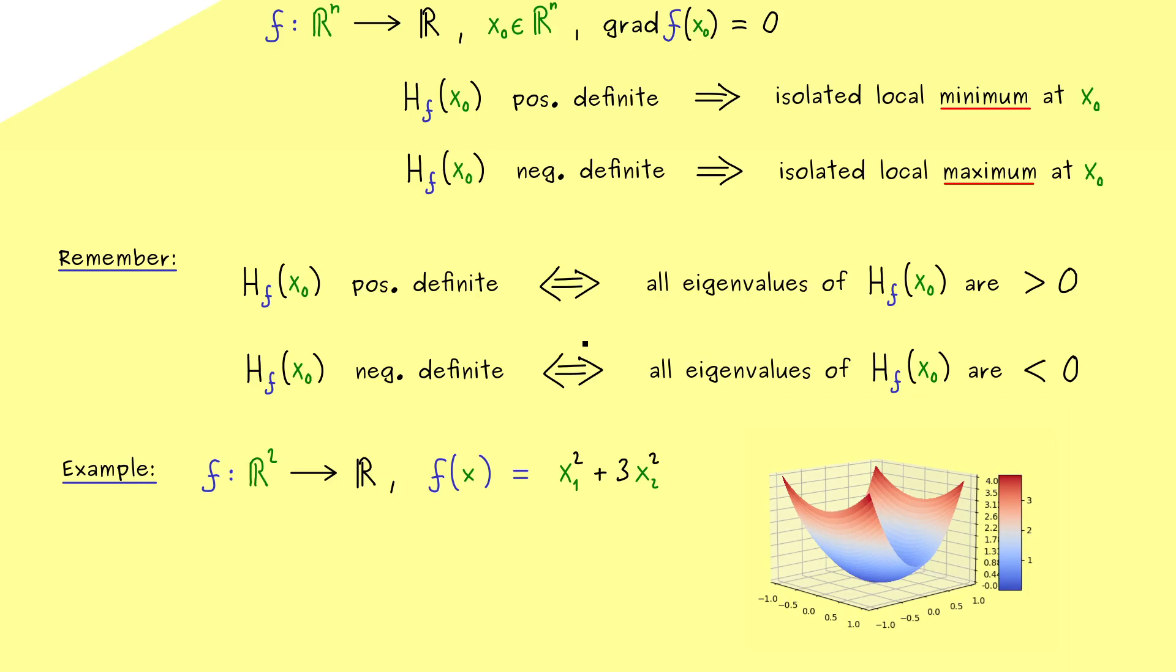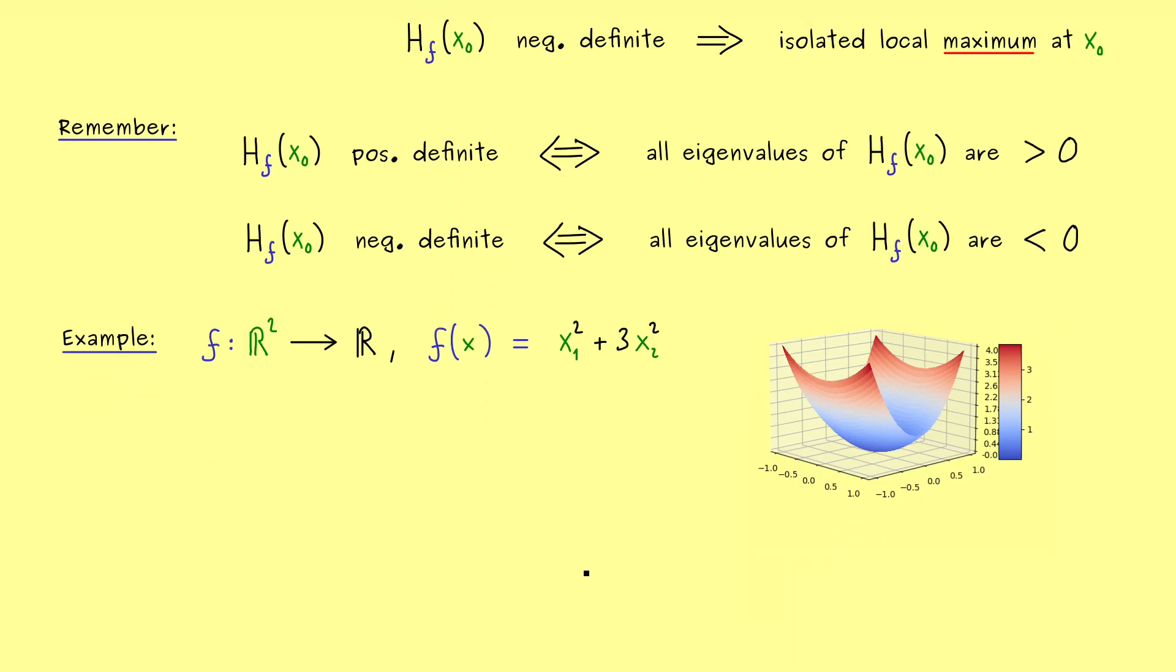However for us now it's only important to see that we have a minimum here in the origin. From our picture it's very clear the only minimum should be there but now the question is how can we prove it. So now it means we have two things to do. First we calculate the gradient of f and then the Hessian. In other words we just have to calculate partial derivatives. This should not be too hard because we only have quadratic functions here.